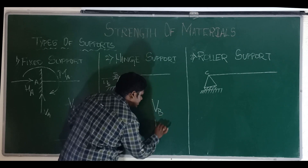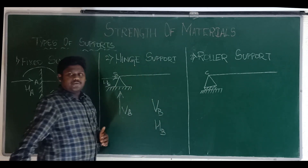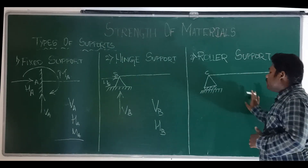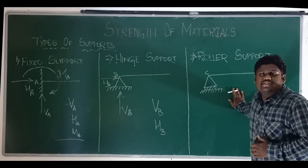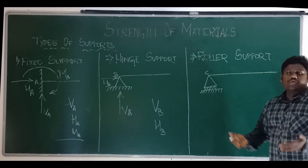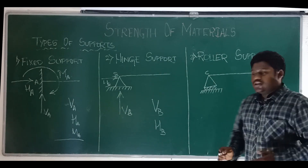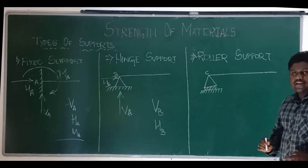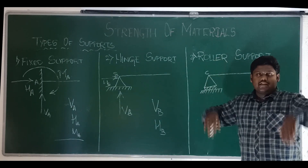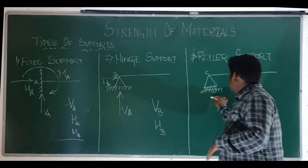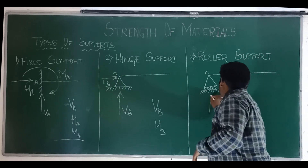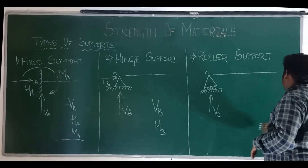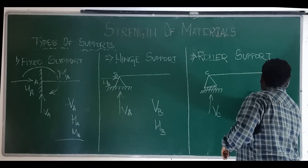The third type is a roller support. Here you have one allowable movement for translation and another for rotation. What it resists is vertical movement — vertical movement is not allowed. So the number of reactions for a roller support is one vertical reaction, Pc.